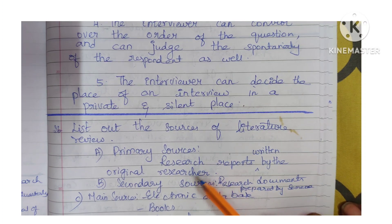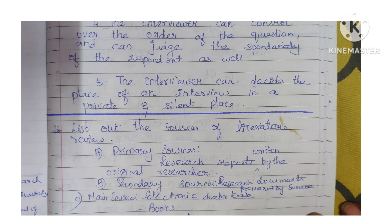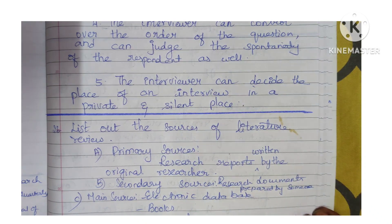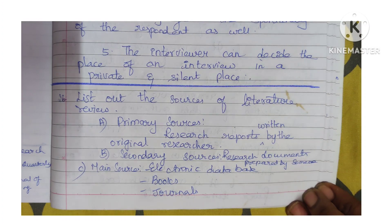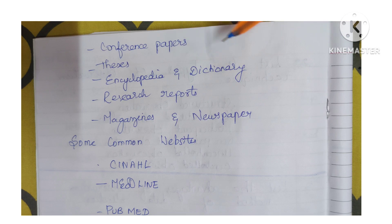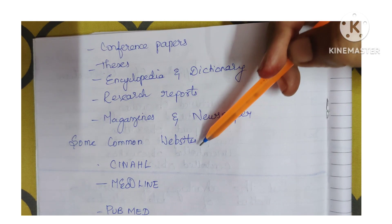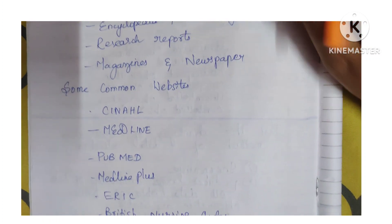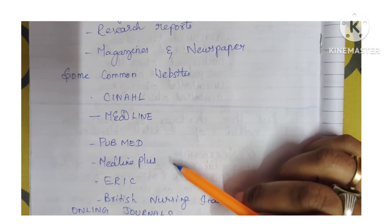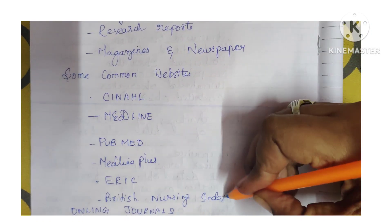Question 26: List out the sources of literature review. Primary sources are research reports written by the original researchers. Secondary sources are research documents prepared by someone other than the original researcher. The main sources are: electronic databases, books, journals, conference papers, theses, encyclopedias, dictionaries, research reports, magazines, and newspapers. Common databases include CINAHL, MEDLINE, PubMed, MEDLINE Plus, ERIC, and British Nursing Index.